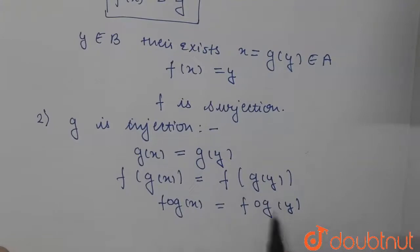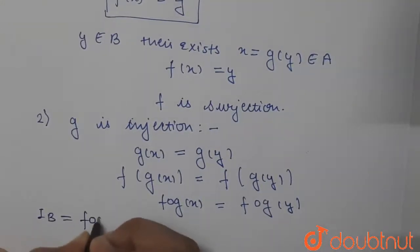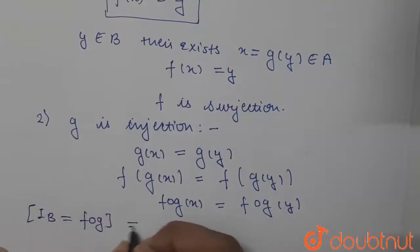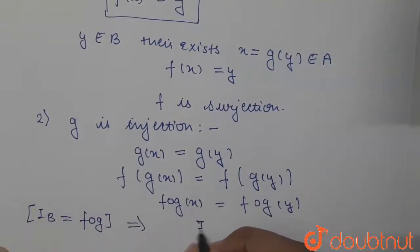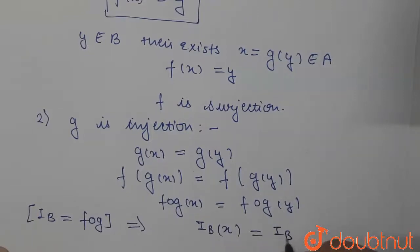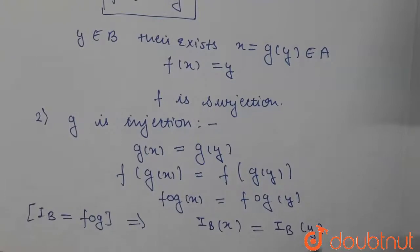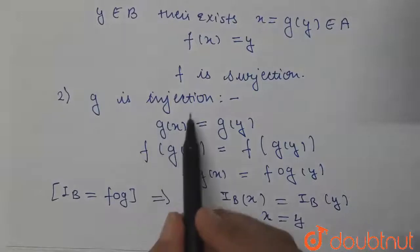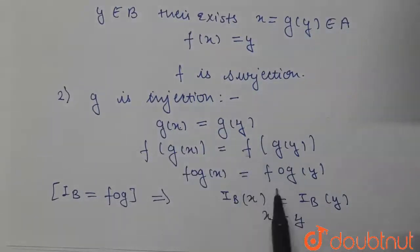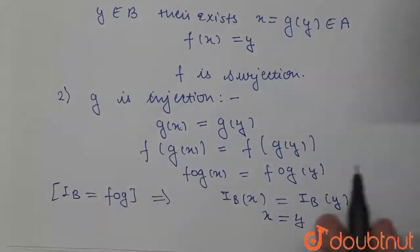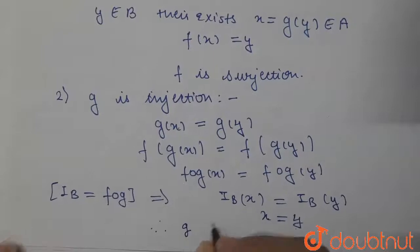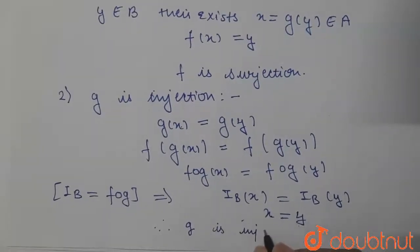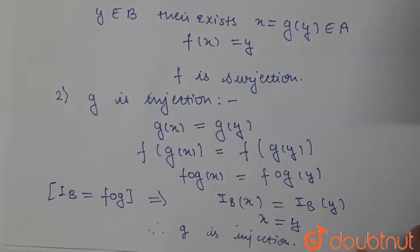Since fog equals iB is given, we can write iB of x equals iB of y. We know that the identity function maps every element to itself, so x equals y. Since we assumed g of x equals g of y and derived x equals y, therefore g is an injection. So we have proved that f is a surjection and g is an injection.